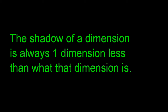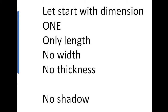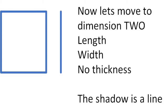The shadow of a dimension is always one dimension less than what that dimension is. A one-dimensional object is a line — it has only length, no width, no thickness, and it casts no shadow. Moving to dimension two, there is length and width but still no thickness. The shadow of a two-dimensional object is a line, a one-dimensional object.